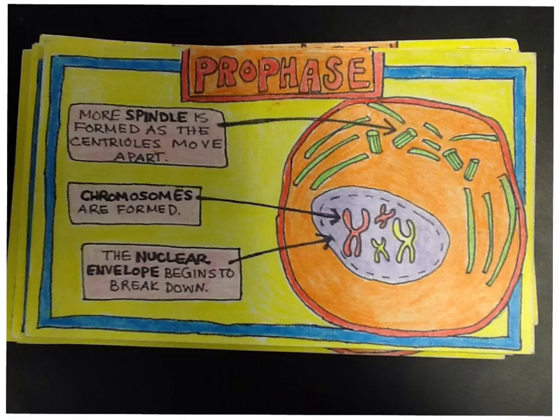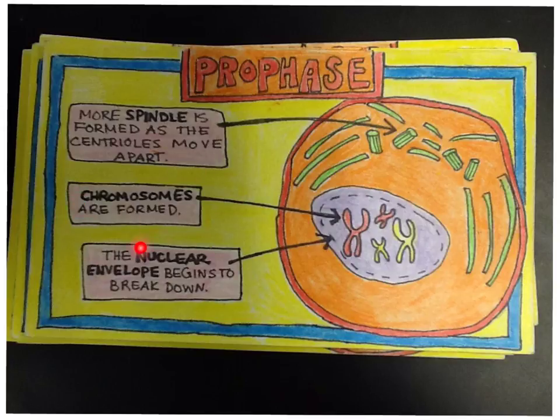For prophase, metaphase, anaphase, and telophase, I expect you to do three animations. You should see prophase moving through, so it should animate like a cartoon would. On the first card for any of the phases, I want you to describe the phase. Here you see her talking about spindles, chromosomes, the nuclear envelope breaking down, etc., and she's got a nice vivid depiction.